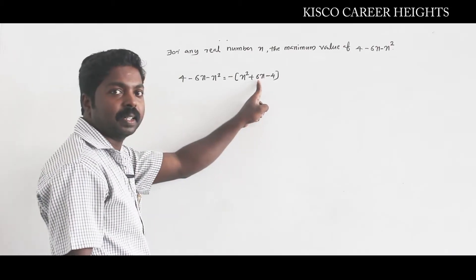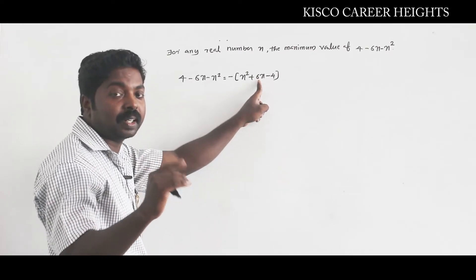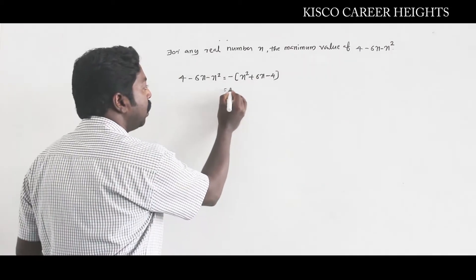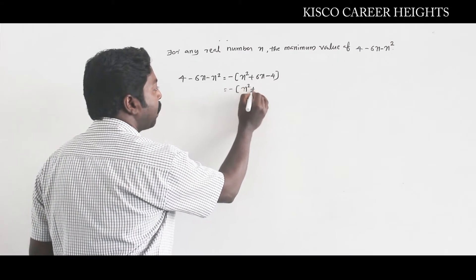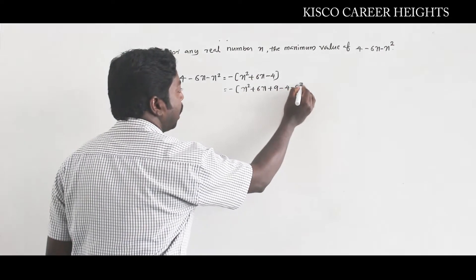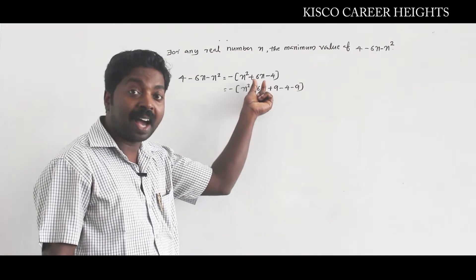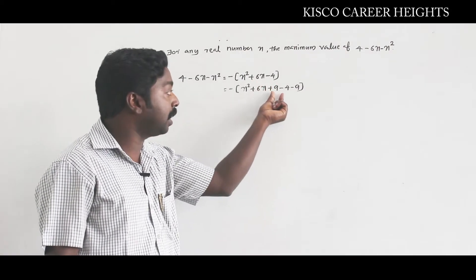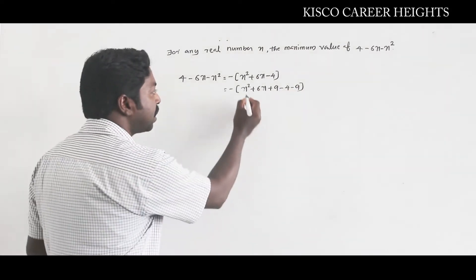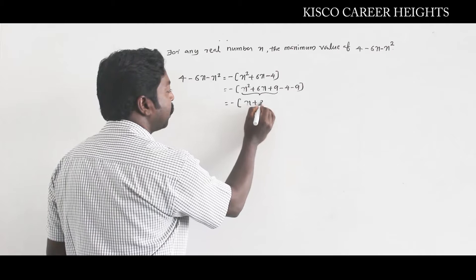To the coefficient of x, that is 6, take its half — 3 — then take its square — 9. Add and subtract that 9. Now it turns to minus of (x² + 6x + 9) minus 4 minus 9. We are adding and subtracting the square of half the coefficient of x. The first three terms already constitute a perfect square: -(x + 3)².